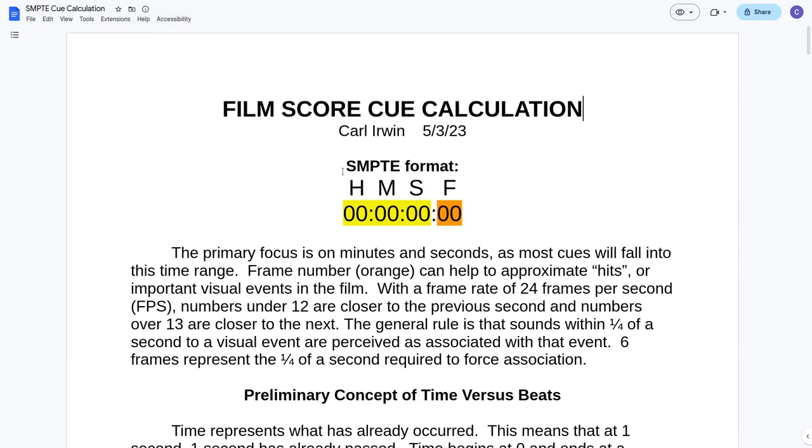Film score cue calculation. SMPTE format, this is the time code format: hours, minutes, seconds, and frames. So what this means is that you have the typical time increments, but frames is related to the number of frames per second in the actual media. So frames per second, common frames per second would be 24 frames per second, which is for film.